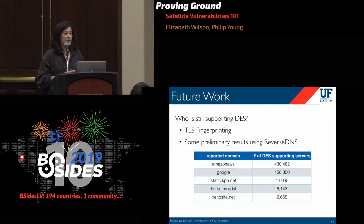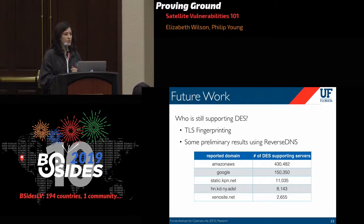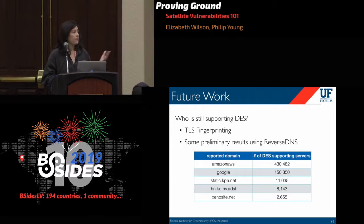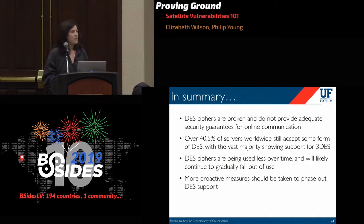We also wanted to know who is still supporting DES. In future work, we're hoping to fingerprint IP addresses that advertise DES support. We have some preliminary results using reverse DNS, and what we find is that companies offering cloud computing or leasing computing power have the largest numbers of DES-supporting servers. We assume this isn't the company's own practice but rather whoever they're giving these machines to is responsible for the configuration — though we're not entirely sure.